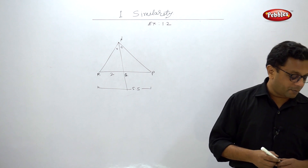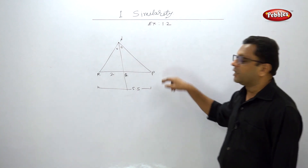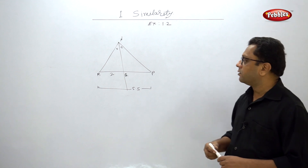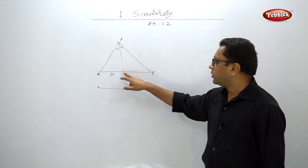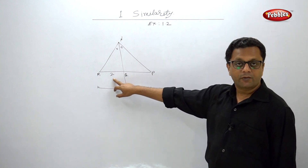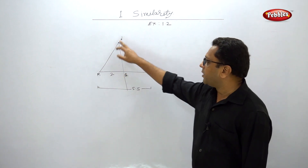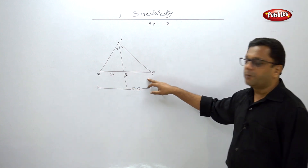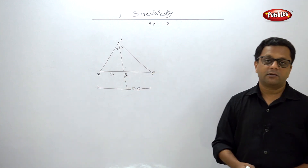Find MN upon NP. By the angle bisector property of a triangle, MQ/QP equals MN/NP. QP = 5.5 − 2 = 3.5, so MN/NP = 2/3.5. Simple.